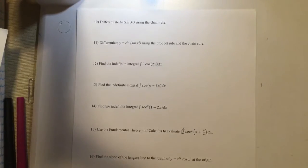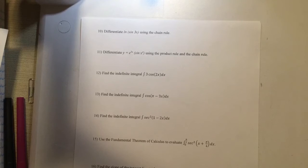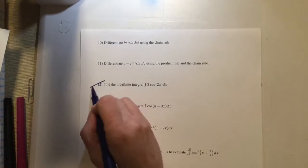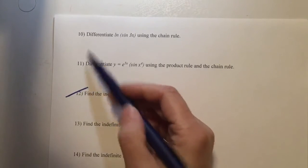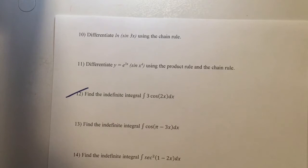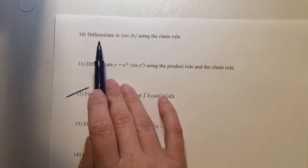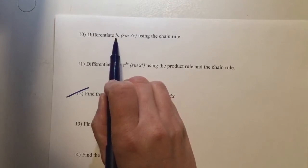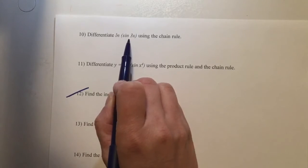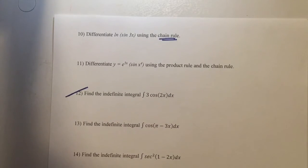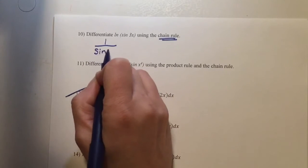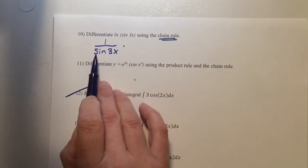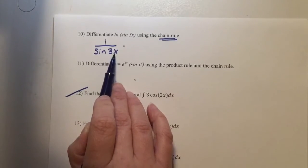Let's look at a couple more derivatives. I'm going to do 10 and 11 and then this will be split into two videos — there will be an exam review video 2 starting at number 12. If you are finding a derivative and it's a natural log of anything other than just an x, that's where you have to use the chain rule. The derivative of a natural log is 1 over whatever is right inside — so that is 1 over the sine of 3x. Because this was more than just a single x, I have to find the derivative of the inside.